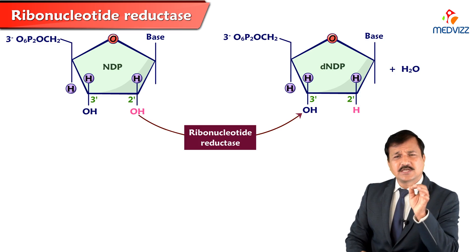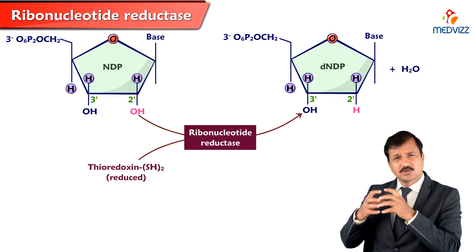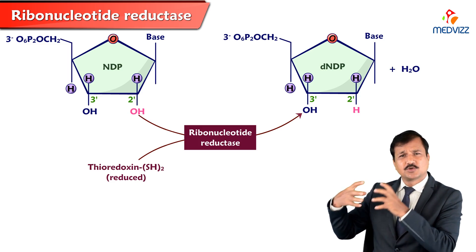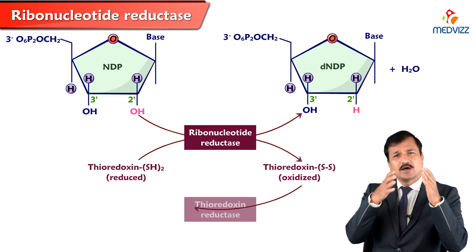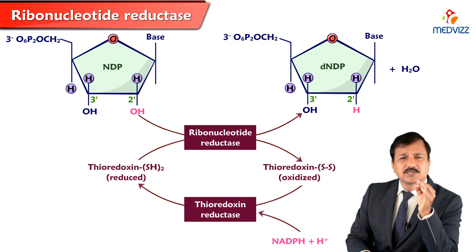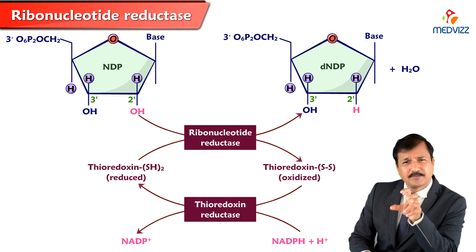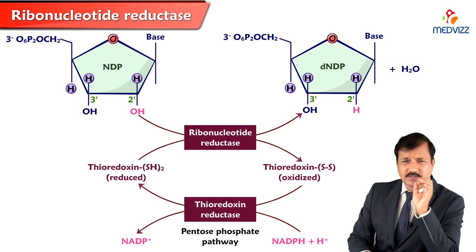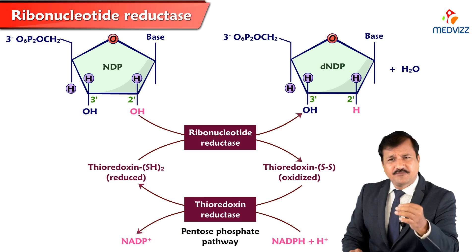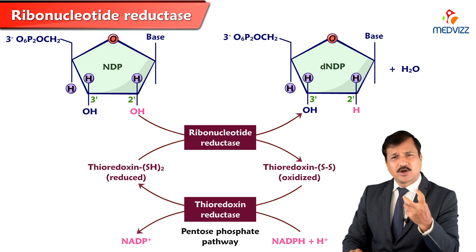A molecule called thioredoxin, which has thiol groups with SH, enters the reaction and donates two hydrogens. These two hydrogens are incorporated with the oxygen atom to make water, and thioredoxin becomes oxidized. This oxidized thioredoxin must be reduced back to its reduced form using NADPH plus H+, catalyzed by thioredoxin reductase enzyme. Ultimately, the NADPH providing those hydrogens comes primarily from the pentose phosphate pathway. This is how nucleoside diphosphate is converted into deoxynucleoside diphosphate.